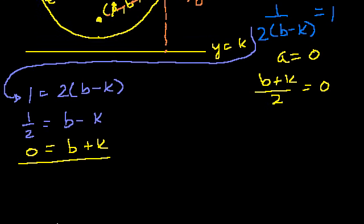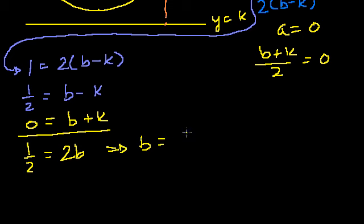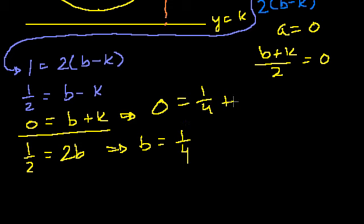Two linear equations with two unknowns: b minus k equals 1/2, and b plus k equals 0. Adding them, the k's cancel out, giving 2b equals 1/2. Dividing both sides by 2, b equals 1/4. Substituting back into b plus k equals 0, you get k equals minus 1/4.